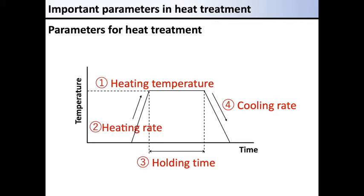The heating temperature is the temperature that the material is heated up to. The heating rate is how long it should take for the material to reach that temperature. Holding time is how long the temperature is kept at the heating temperature. The cooling rate is the time it should take for the material to come back to its original temperature.